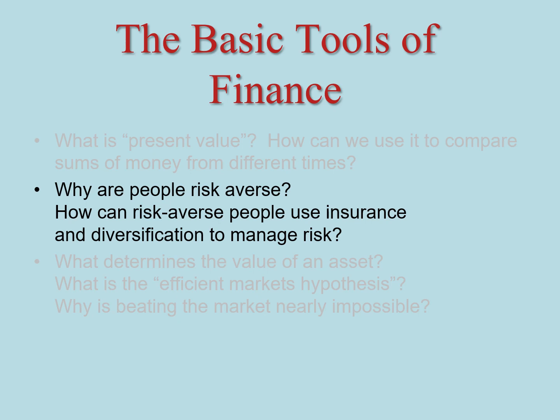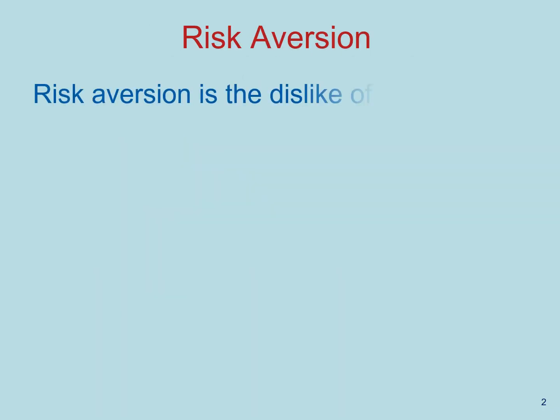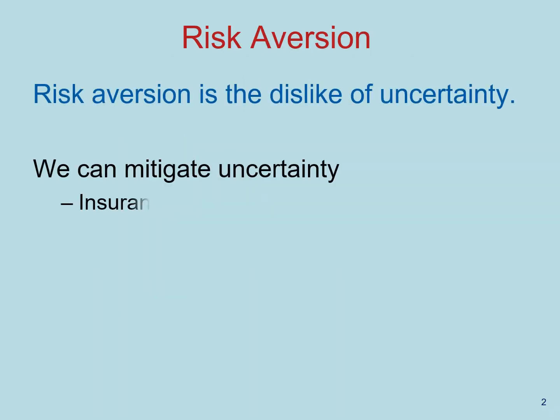In this video, we'll talk about risk aversion: what it is and how we can manage it. Risk aversion is simply put the dislike of uncertainty. And as decision makers, there are two main ways that we can mitigate uncertainty.